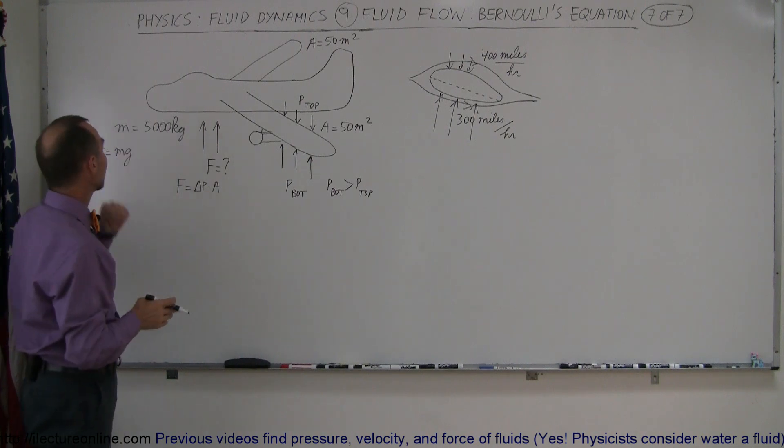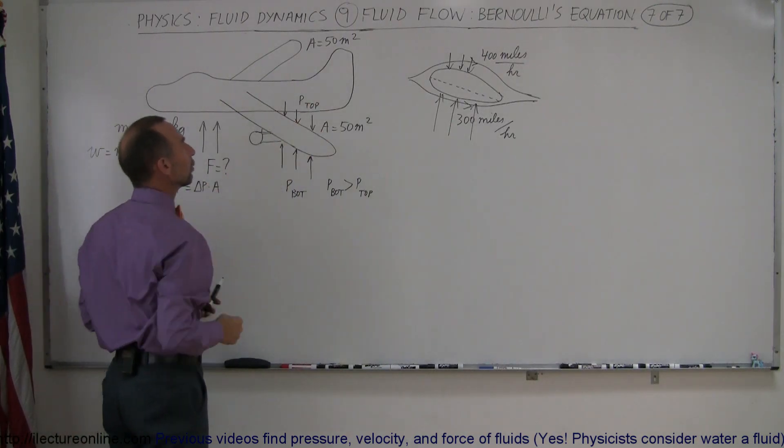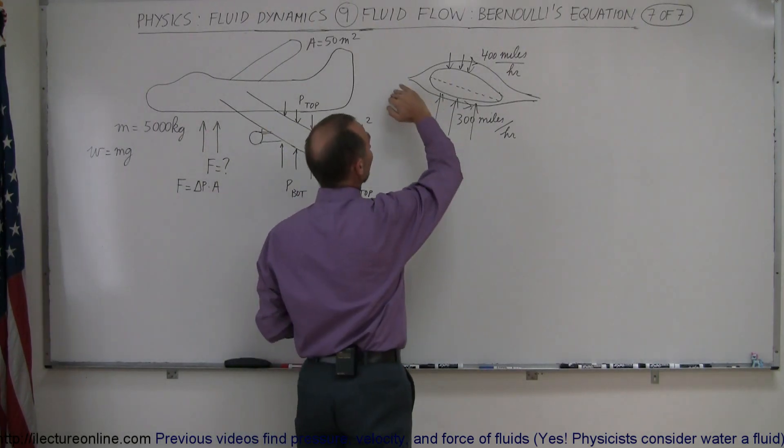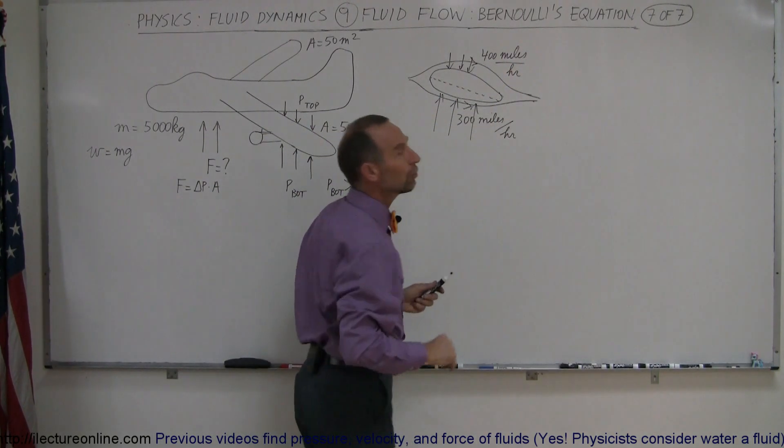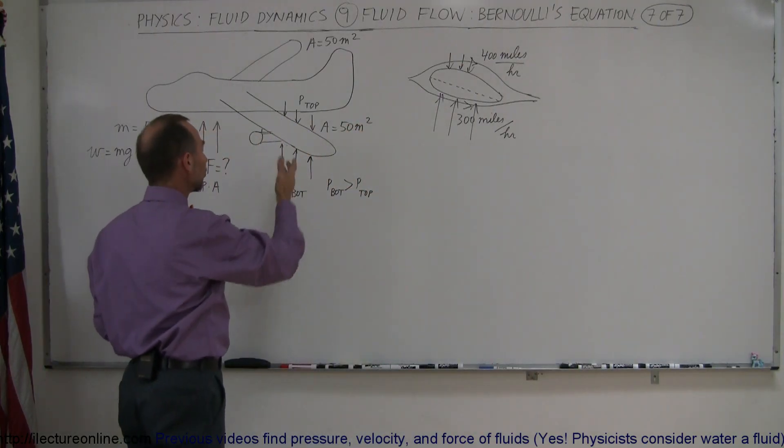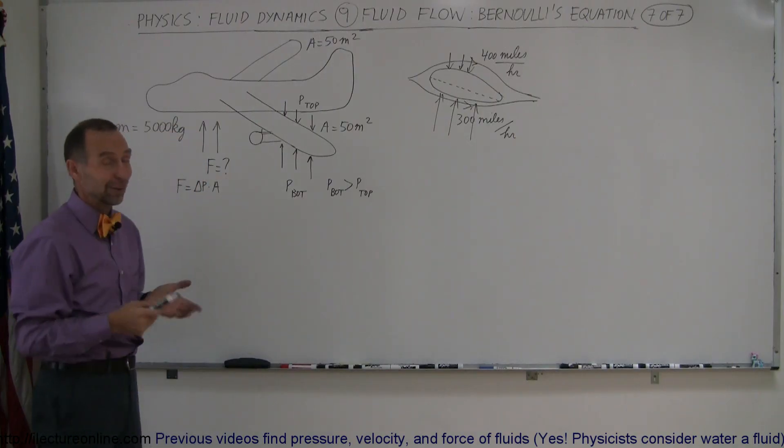Let's say for an example we have an airplane. It has a mass of 5,000 kilograms and it has wings, each of them with an area of 50 square meters. And let's assume in our example that the air above the wing moves at 400 miles per hour and the air below the wing moves at 300 miles per hour. Will that cause enough of a pressure difference to keep the airplane in the air? Now, I haven't worked out this problem yet, so I don't know. I'm kind of curious, so let's go find out.